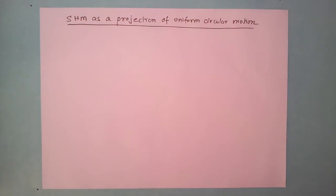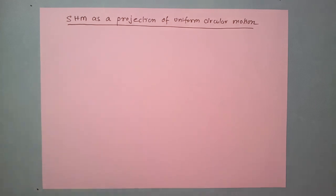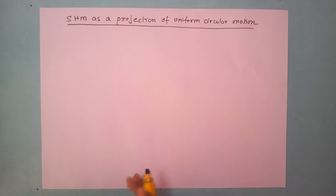We are going to continue our discussion on simple harmonic motion and arrive at some very important conclusions. We discussed that SHM is periodic in nature, it is an oscillatory motion, it must follow a sine or cosine function, and the amplitude has to be constant. These are some of the key features of simple harmonic motion.